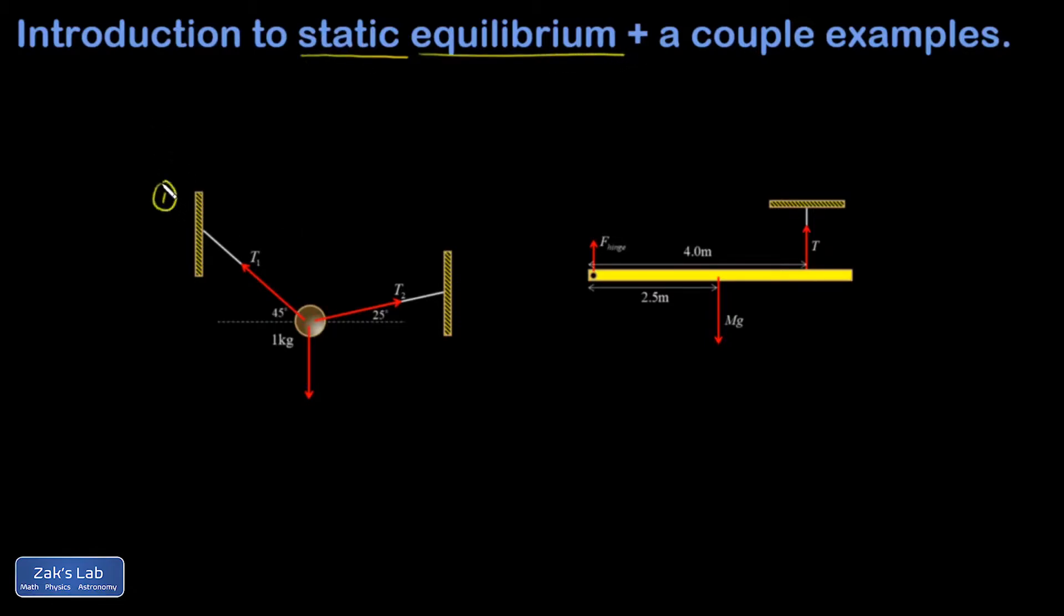The first example has just a point mass suspended from strings, and the second example has an extended body - a rod with a hinge at one end and a string holding it up. We're trying to find the force exerted by the hinge and the force exerted by the string.